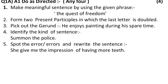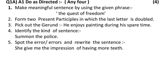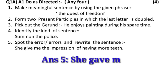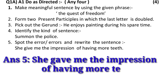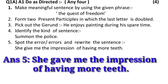The fifth and last one is: spot the error or errors and rewrite the sentence. One sentence with an error is given and you have to write the correct form. The sentence is: 'She gave me the impression of having more teeth.' The error here is that the whole sentence is in past tense form but 'give' appears in present tense. The corrected answer is: 'She gave me the impression of having more teeth.'